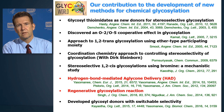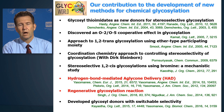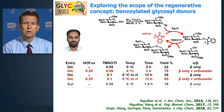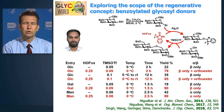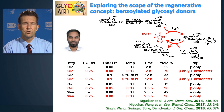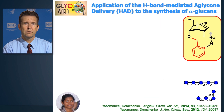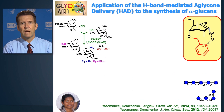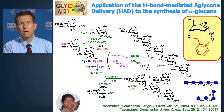This slide summarizes some of our methods that we've been developing throughout the years, and highlighted in red are two methods I'm going to briefly introduce today. First is regenerative glycosylation, which we introduced in 2014, and we recently showed its efficiency and application to oligosaccharide synthesis. The second is hydrogen bond mediated aglycone delivery, or HAD, which allows us to synthesize very challenging glycan structures.